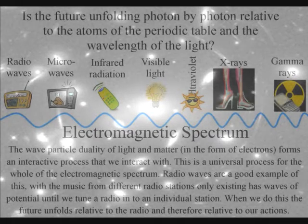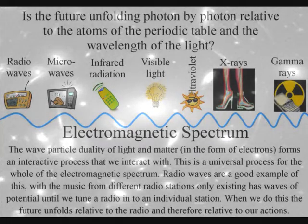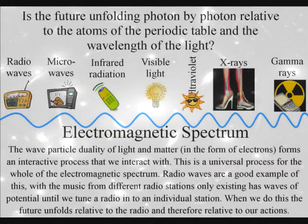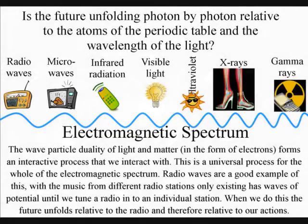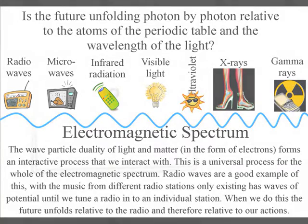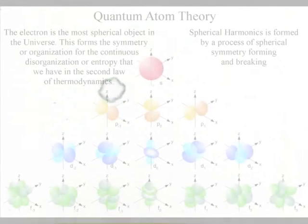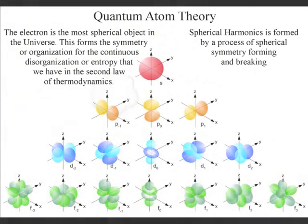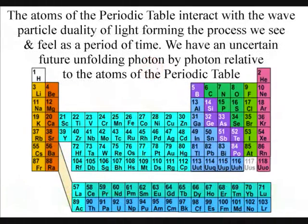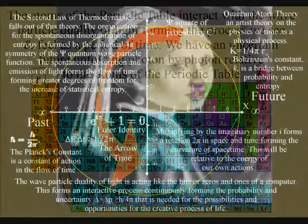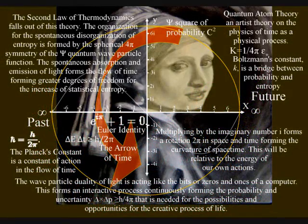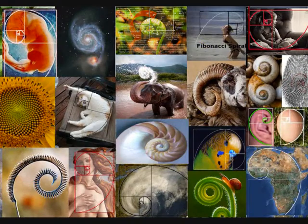And it is also logical that we should be able to explain this by physics as a physical process. There is one physical process that could explain this, and that is if the universe is based on a universal process of spherical symmetry forming and breaking relative to the atoms of the periodic table. Such a process would naturally form entropy or disorganization, with the potential for ever greater symmetry formation that we see in the diversity of life and in modern electronics.